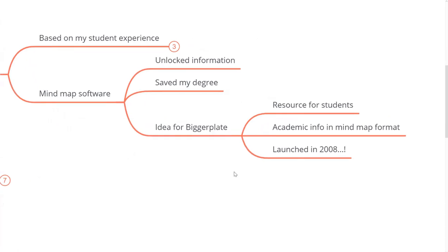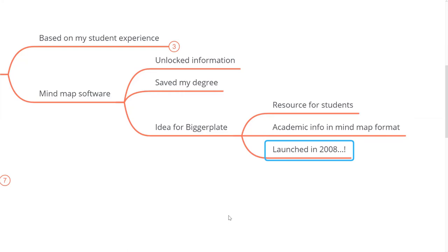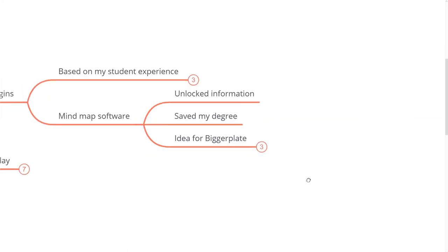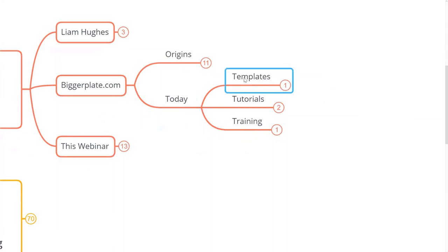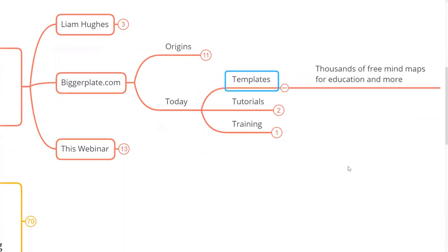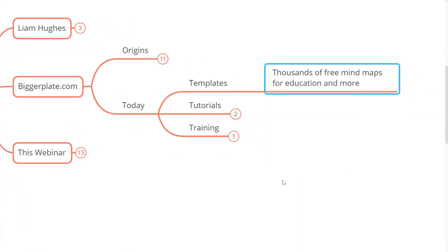Mind mapping software provided the original idea for BiggerPlate. The idea was to create a resource for students specifically, where they could get academic subject information in a mind map format — a skeleton they could develop, work with, and add to. From that original idea in 2006, the website launched in 2008. Today, BiggerPlate has thousands of free mind maps for education, business, and more, all available to download and share for free.